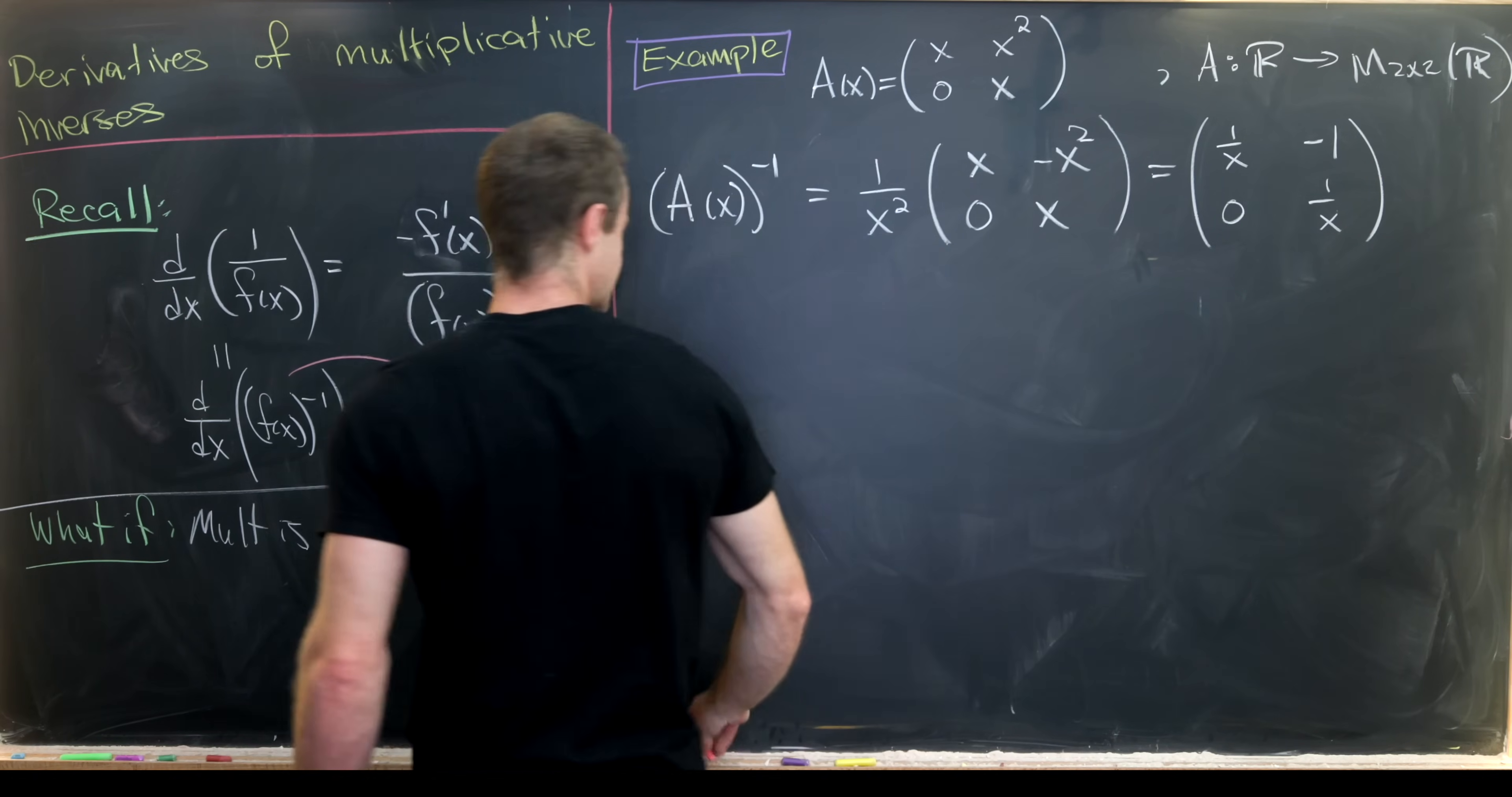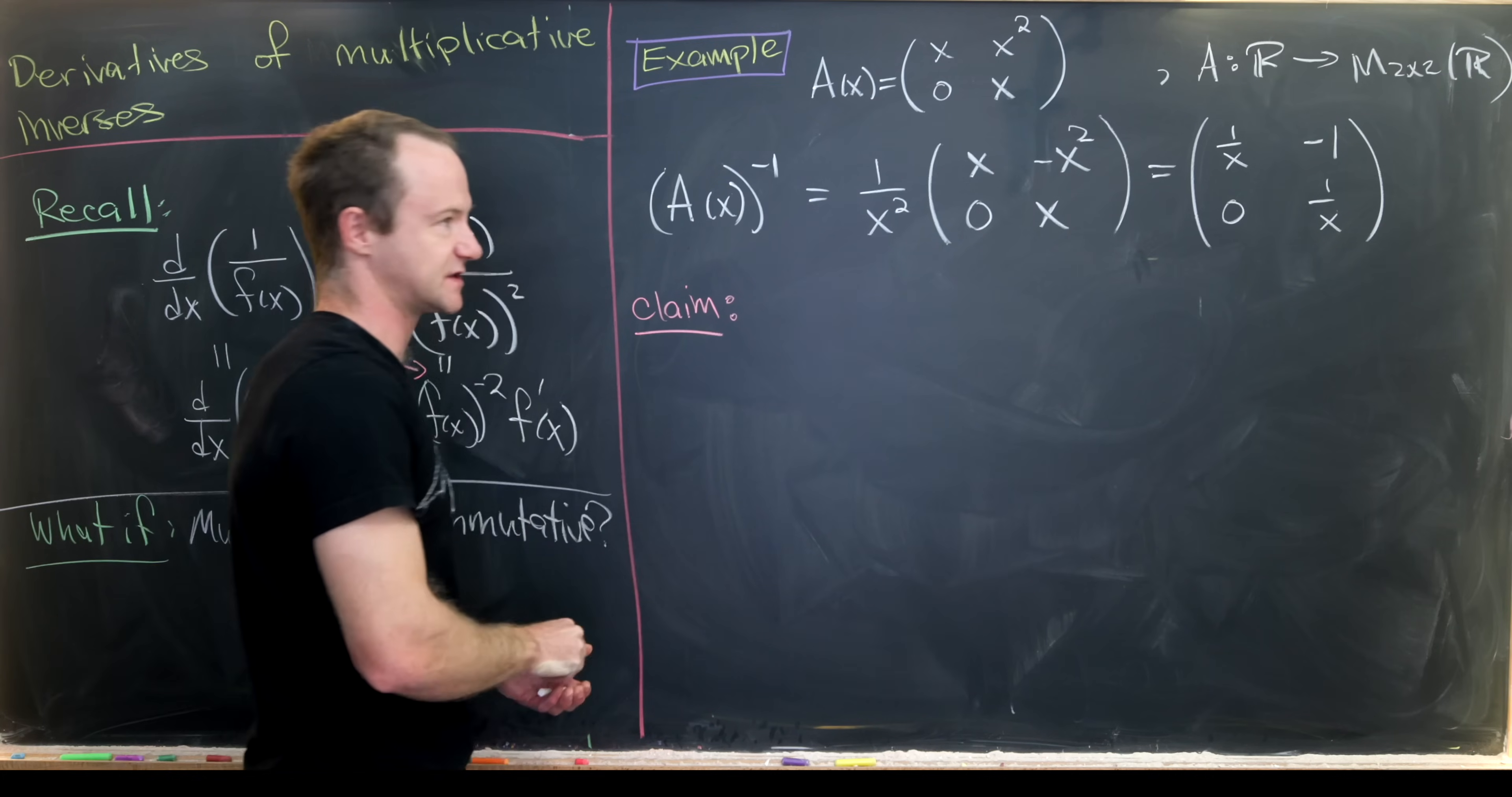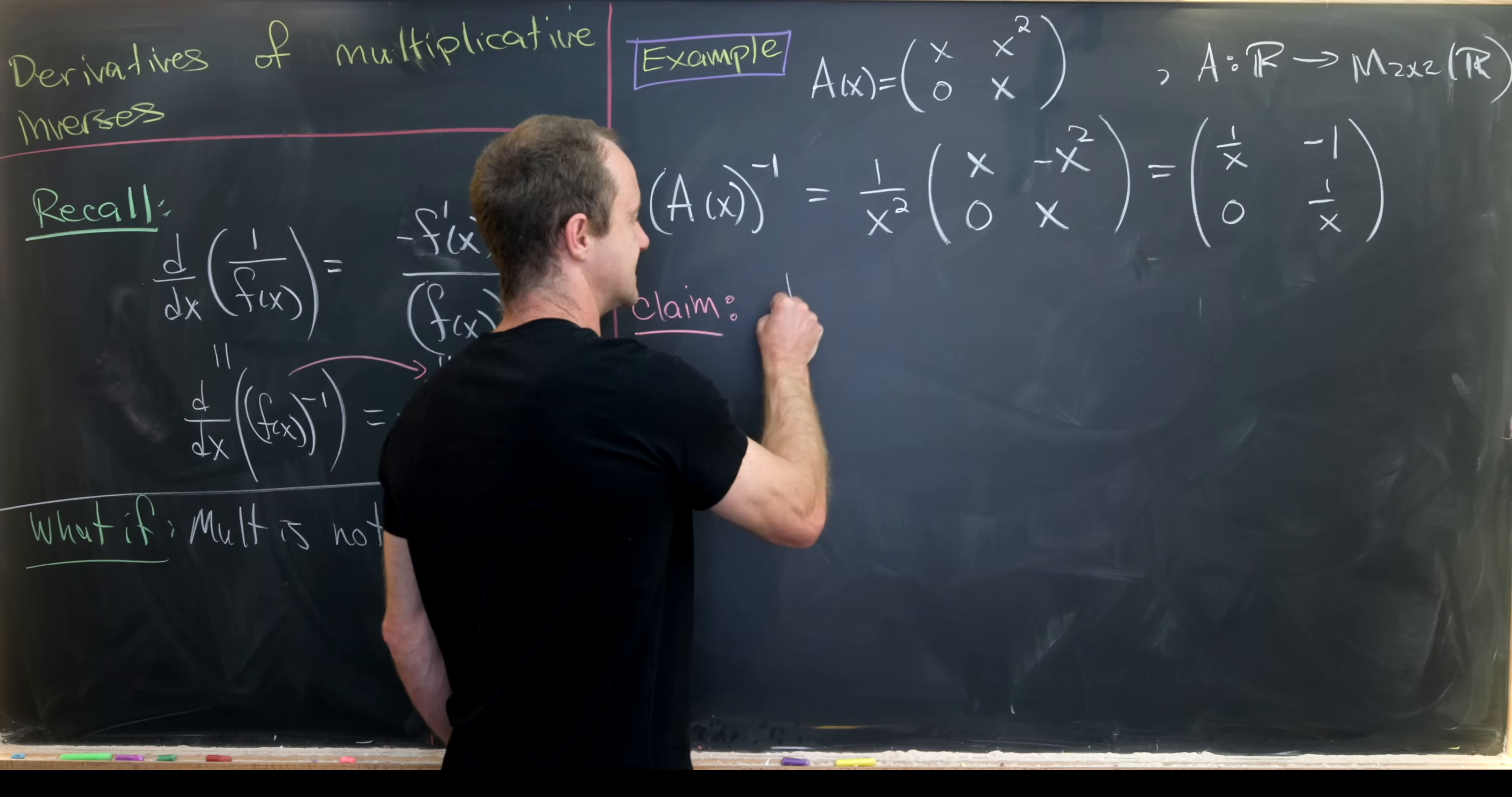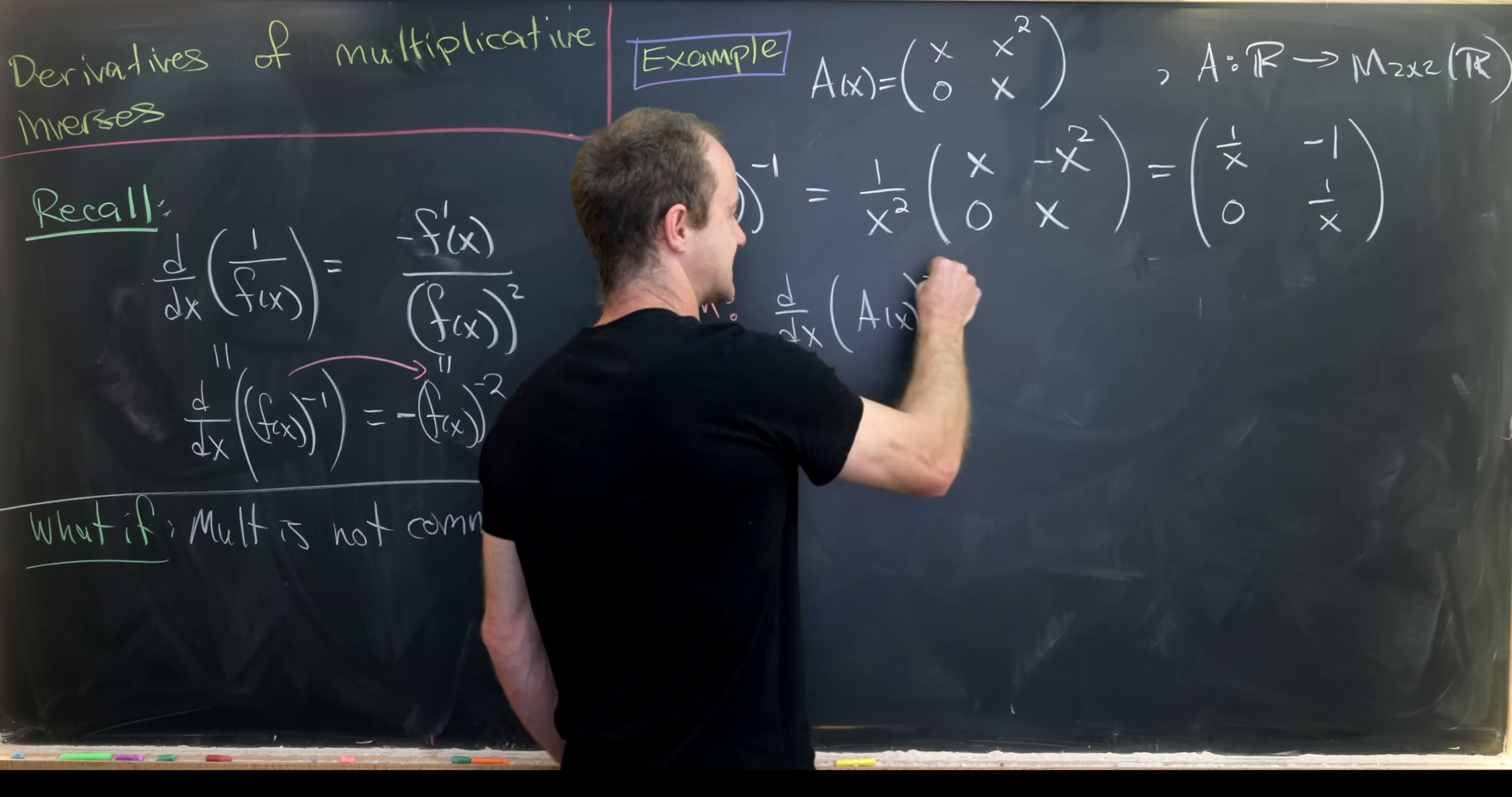Now let's write a quick claim of what we indeed want to show now that we've got these parts built up. The claim should be just to verify that formula that we had on the last board.